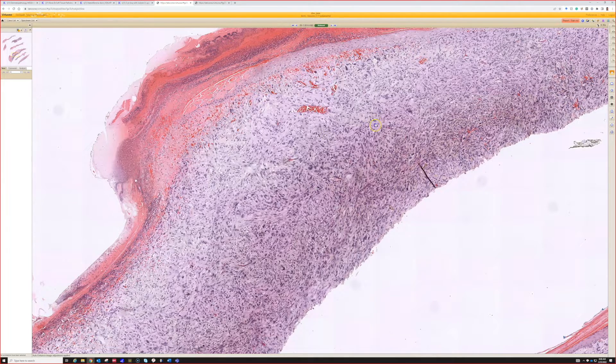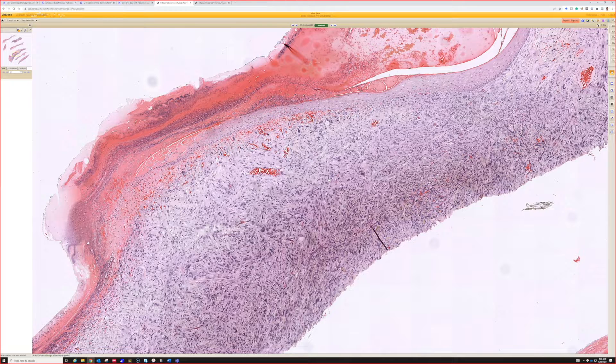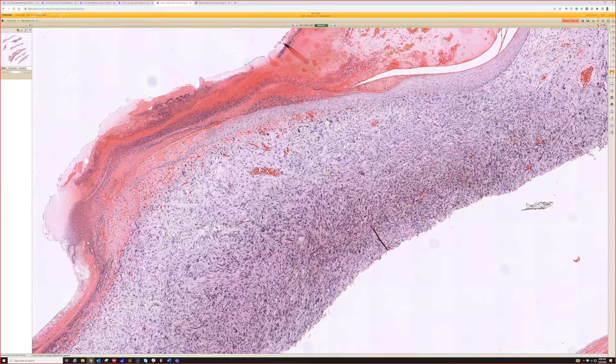I do desmin though, when I work these up, because I want to rule out rhabdomyosarcomas, which very rarely can occur in the skin, even in old adults. And they tend to behave very aggressively, even when they're small and cutaneous.